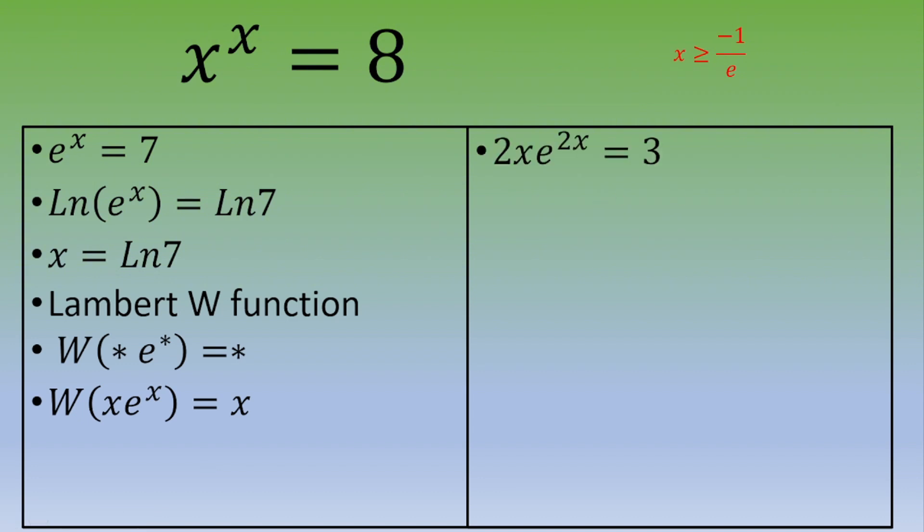Again, if we got this equation to solve, 2x times e to the 2x equals 3, then we can apply the Lambert W on both sides. And this is W of 2x times e to the 2x.